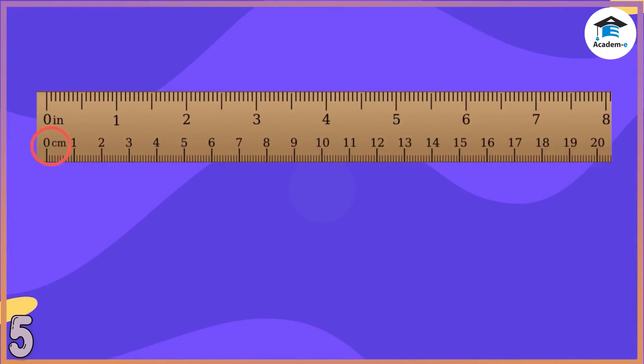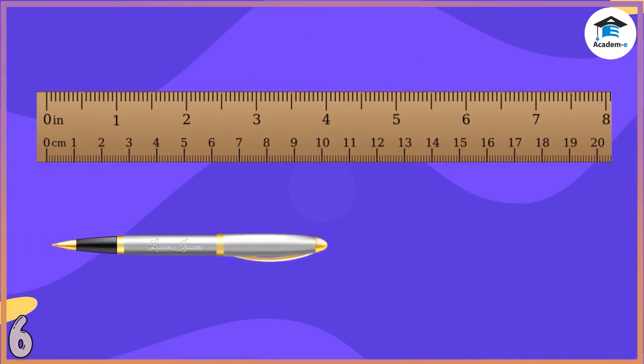We measure the length of an object from the zero mark, counting numbers from 0 to 20. We read the length as 1 centimeter, 2 centimeters, 3 centimeters, and so on. Now let me demonstrate how to measure length in centimeters.